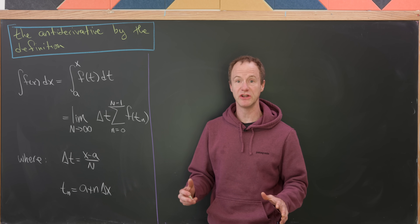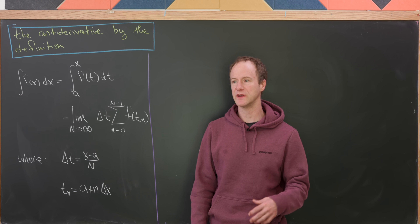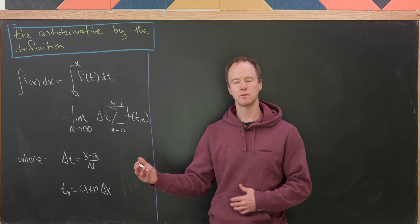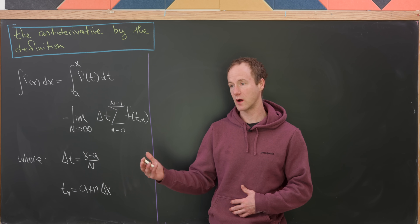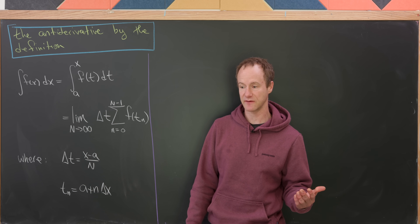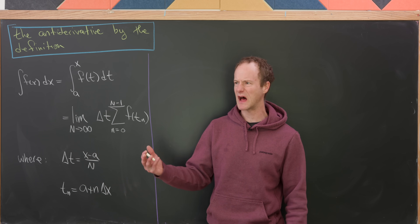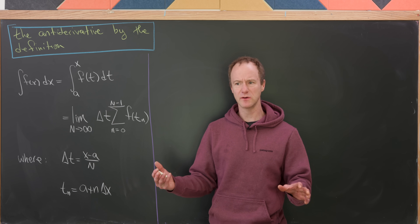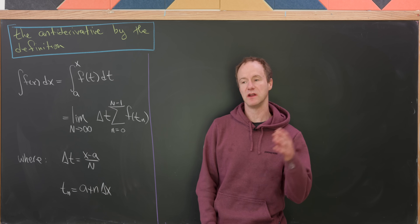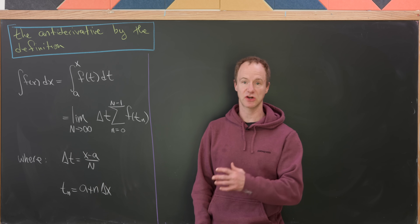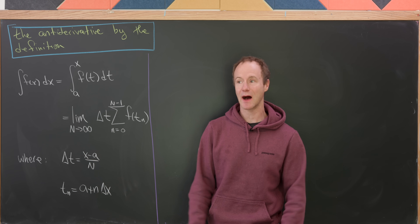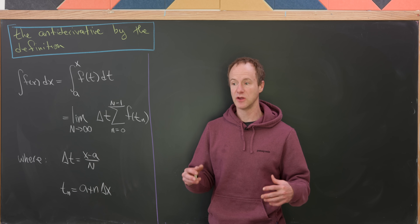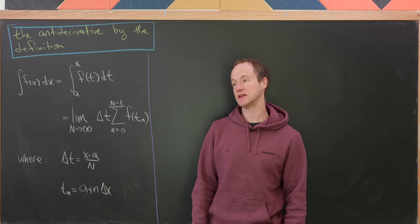Let's suppose that we live in some strange universe. In our world, we define the antiderivative of a function f to be a new function capital F, where capital F prime is equal to little f. But of course, that relies on us having a definition for the derivative. Instead of first defining the derivative and then defining the antiderivative in terms of it, we do the opposite — we come up with a from-scratch definition of the antiderivative.